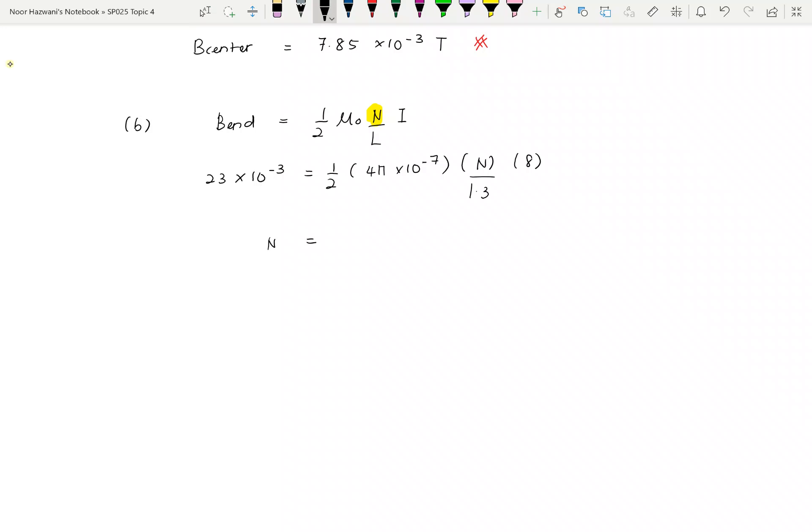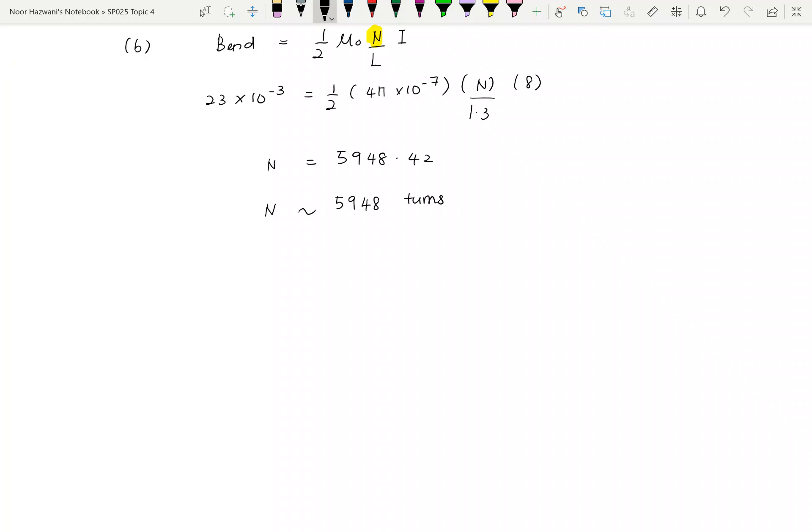So 5,948.42. Jadi untuk number of turns, bila you dapat perpuluhan, maksudnya dia tak lengkap lagi 1 lah. Yang last kali maksudnya number of turns adalah 0.42. Jadi you akan ambil the lower value lah, the smaller value. So you akan end dengan 5,948 turns. So that's the answer. You tak boleh ambil the greater 1 lah sebab turns tu yang the last turn is not complete yet.